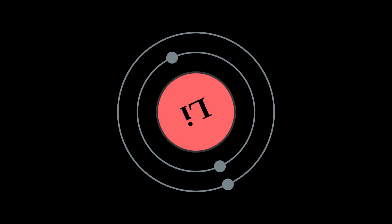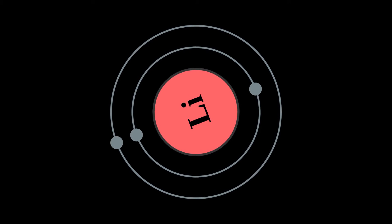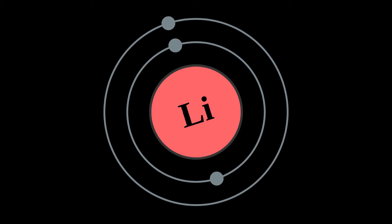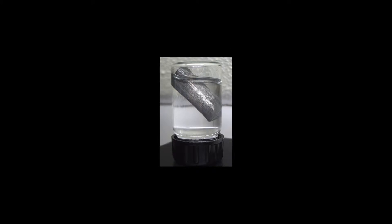For this reason, it is typically stored in mineral oil. When cut open, it exhibits a metallic luster, but contact with moist air corrodes the surface quickly to a dull silvery grey, then black tarnish.